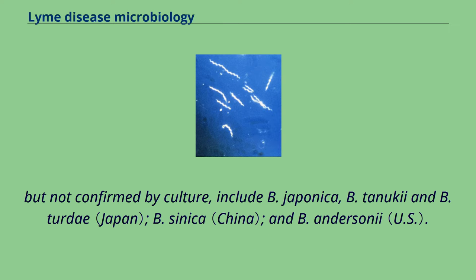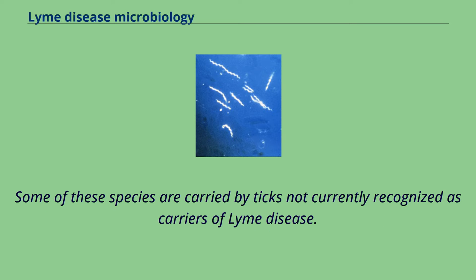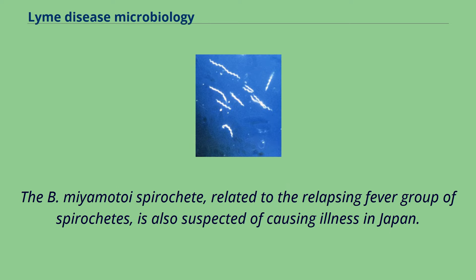But not confirmed by culture, include B. japonica, B. turdae, B. sinica, and B. andersonii. Some of these species are carried by ticks not currently recognized as carriers of Lyme disease. The B. miyamotoi spirochete, related to the relapsing fever group of spirochetes, is also suspected of causing illness in Japan. Spirochetes similar to B. miyamotoi have recently been found in both Ixodes ricinus ticks in Sweden and I. scapularis ticks in the U.S.